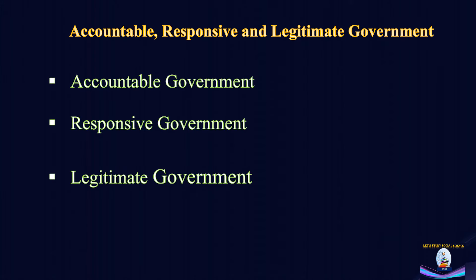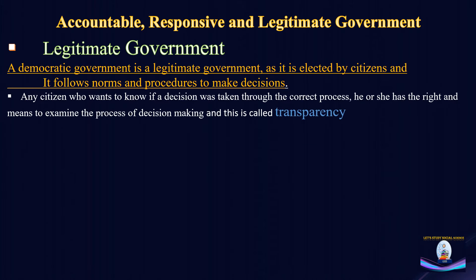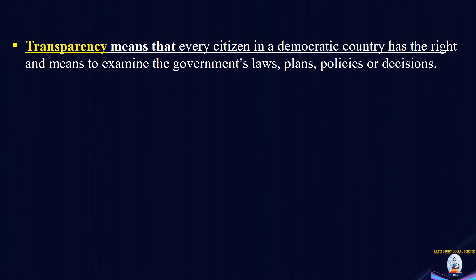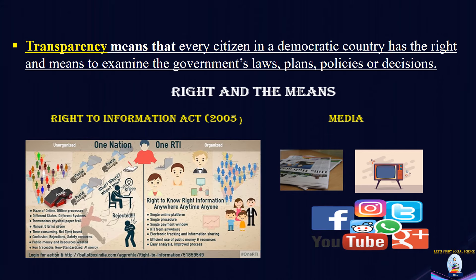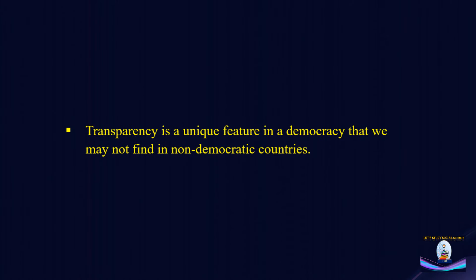The next political outcome of democracy is legitimate government. A democratic government is a legitimate government because it is elected by citizens and it follows procedure to make decisions. Decision making in democracy is based on norms and process. If any citizen in a democratic country wants to know about the procedure for a particular decision, he or she has the Right to Information Act passed in 2005, and means like newspapers, news channels and social media to examine the process of decision making — and this is known as transparency. Transparency means every citizen has the right and means to examine the government's laws, policies, programs and decisions, and can examine how government plans and policies are beneficial for them. Transparency is a unique feature of democracy that we may not find in non-democratic countries.